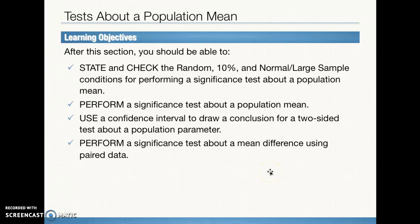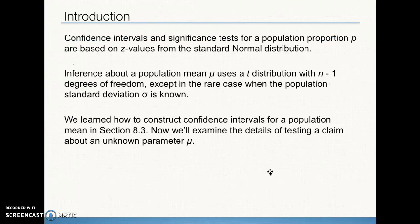Back in Chapter 4, we started learning about matched pair design — this is an application of that. This will also be a great lead-in to Chapter 10, where we'll be comparing two different groups or populations, which is different from a paired test. A quick recap: confidence intervals and significance tests for a population proportion p are based on z values and the standard normal distribution, but for inference about a population mean, we use a t distribution with n minus 1 degrees of freedom, except in the rare instances when we actually have the population standard deviation sigma.